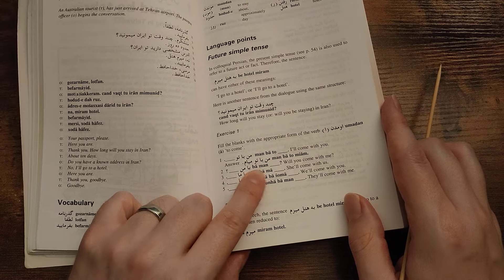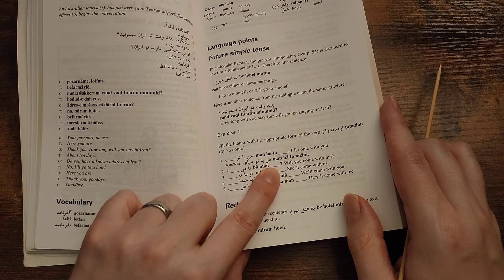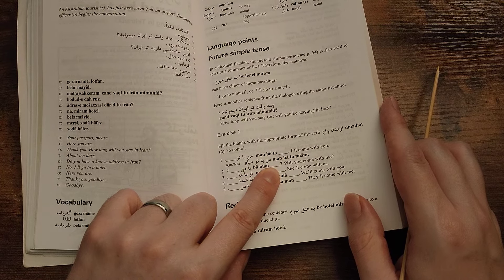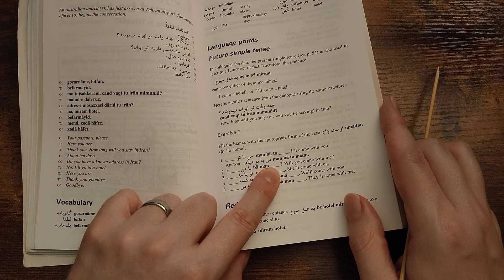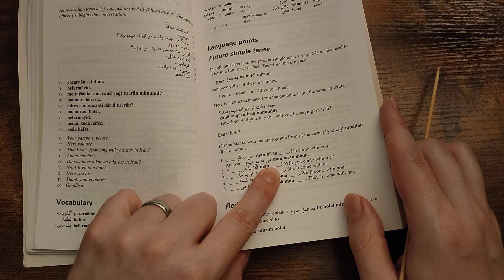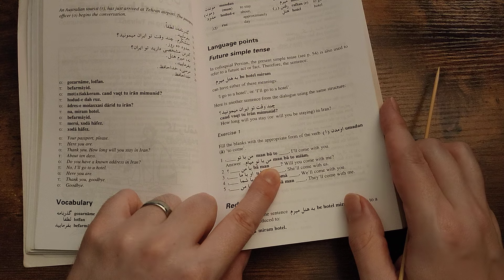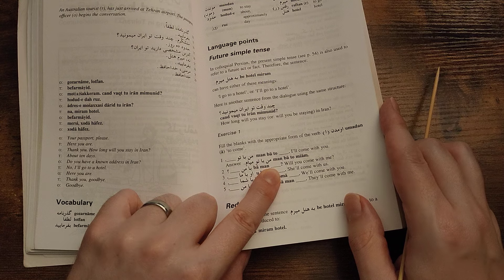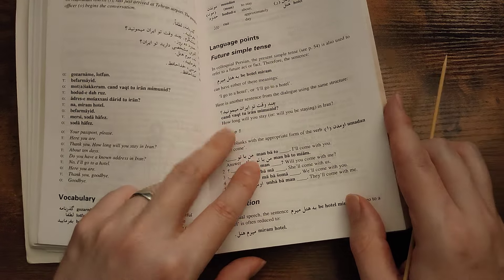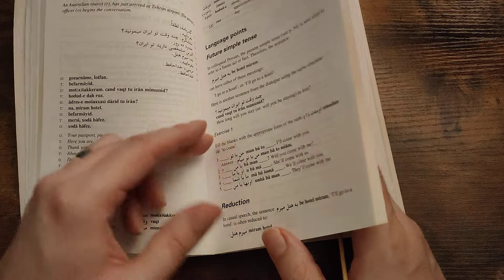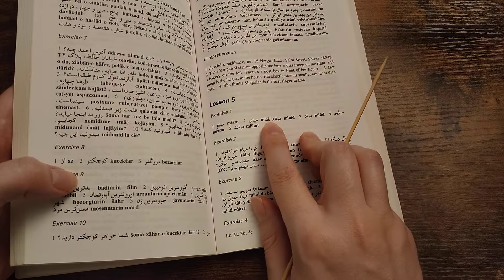Next one. Ba man, so it'd be miyai. When you come with me, ba man, with me. You come miyai. What's that? Miyai. Yeah.